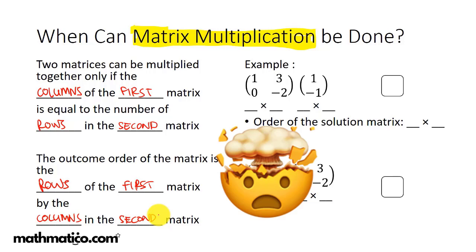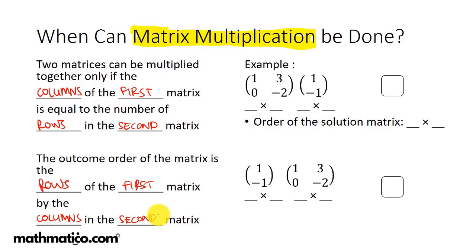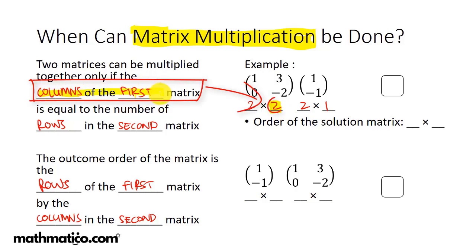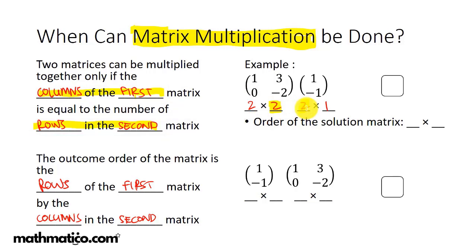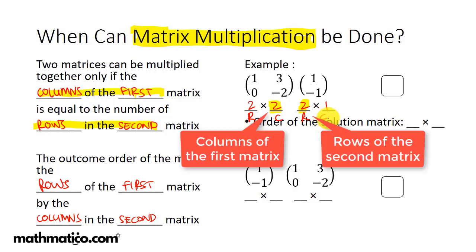It's very confusing, so let's look at an example. I always like to tell my students to write down the order below. Here you have a 2×2 matrix and a 2×1 matrix. To check if multiplication is possible, look at the columns of the first matrix and the rows of the second — you always have rows then columns (R and C). The columns of the first equals the rows of the second, so yes, matrix multiplication can be done.